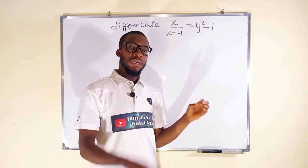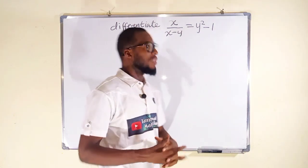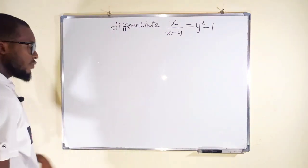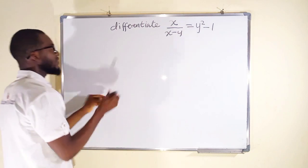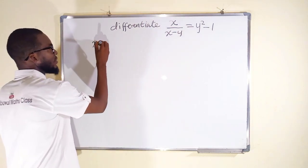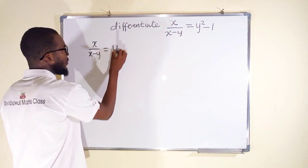All right, we are going to start by differentiating the left and the right hand side simultaneously. We have x over x minus y, and to the right we have y squared minus 1. We are going to differentiate the whole of this expression.